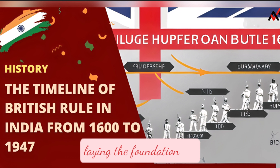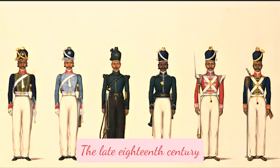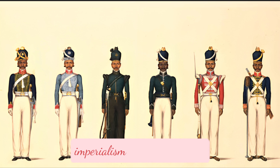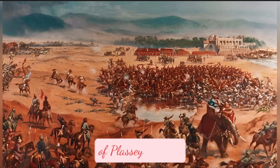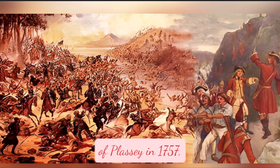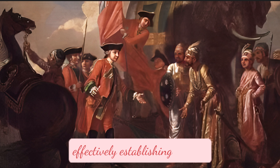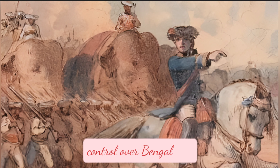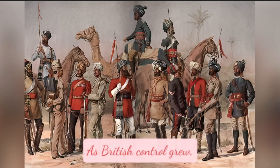This ultimately led to the British East India Company's dominance, laying the foundation for British colonial rule in India. The late 18th century marked the rise of British imperialism as they expanded their control over Indian territories. One significant event during this era was the Battle of Plassey in 1757, where British forces led by Robert Clive defeated the Nawab of Bengal, effectively establishing British control over Bengal and initiating their rule.